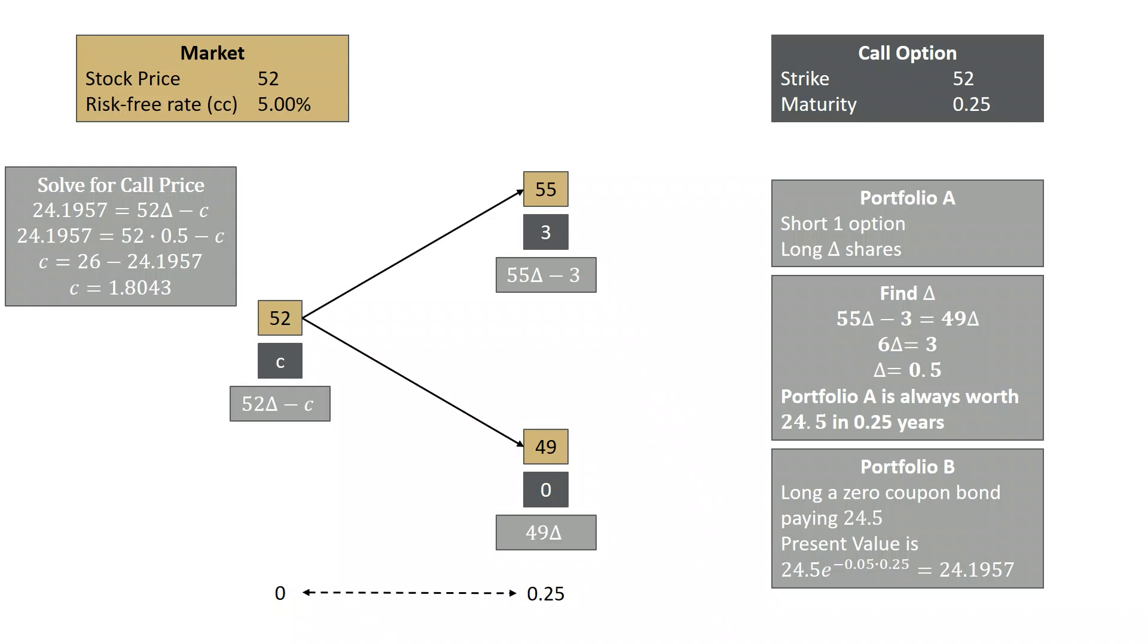We observed that portfolio has the same value as being long a zero coupon bond paying 24.5 in three months. The present value of that is 24.1957.